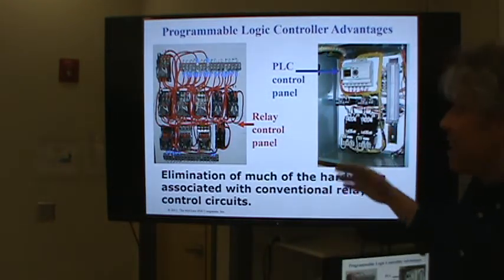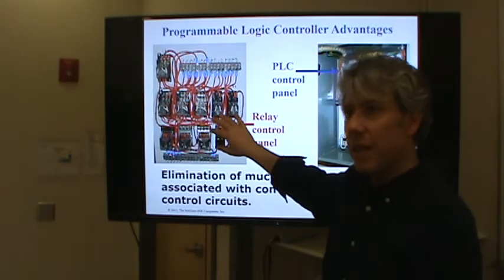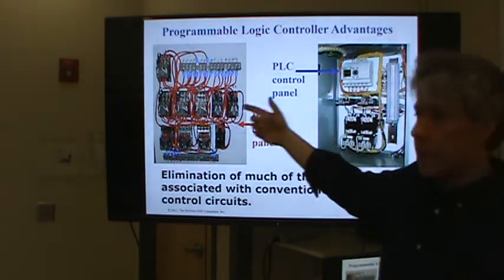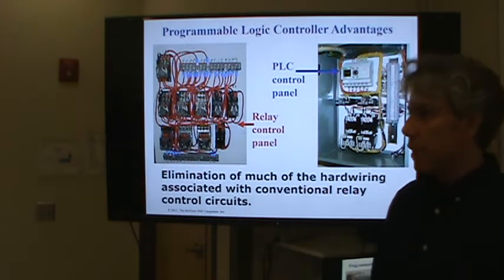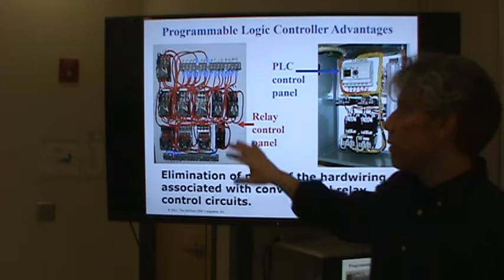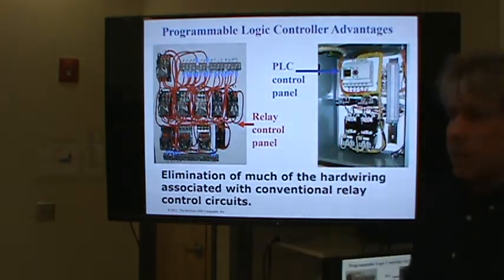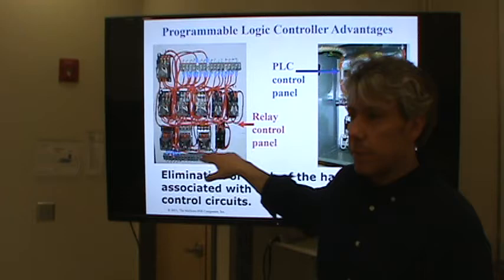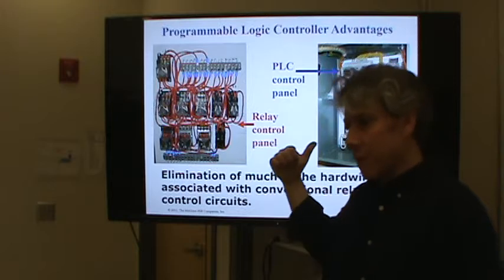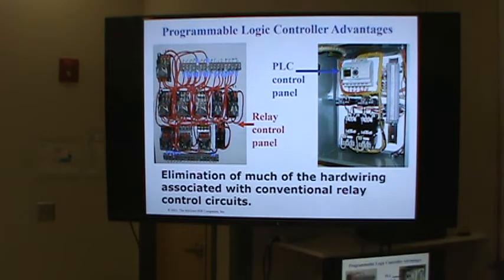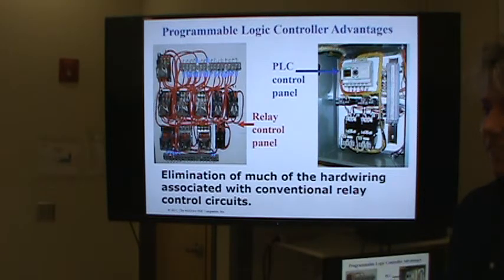The first thing anyone working on that relay panel would do is draw a ladder diagram to figure out what's connected where — then they could understand what it's supposed to do, figure out why it's not doing that, and write a PLC program. So why not just get the PLC? Because as soon as you've got ten relays or so, you could have bought a PLC for that price. A PLC has the equivalent of millions of relays in it. Believe it or not, there are still some relay control panels out there in industry just waiting for you to come along and switch over to PLC.